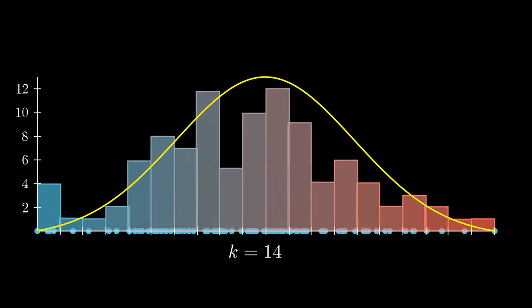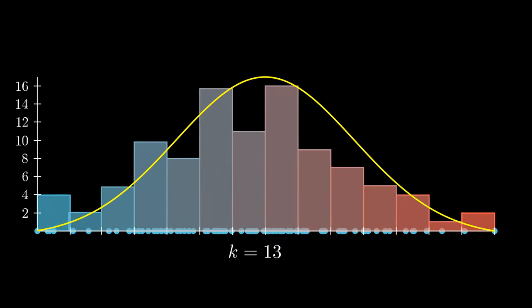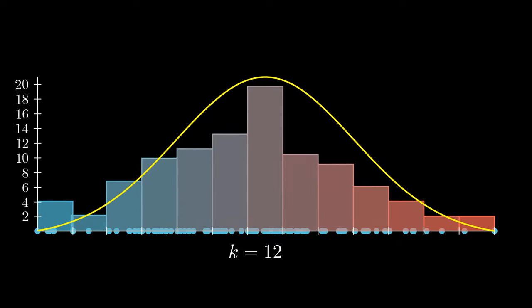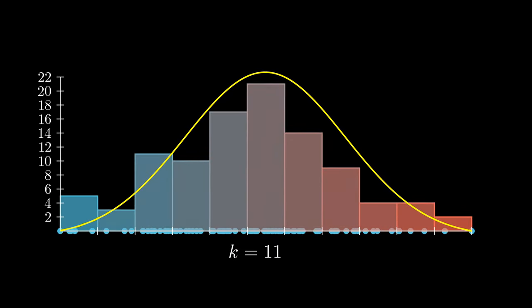However, if we make the bin sizes just right to capture just enough data based on our sample size in each bin, we start to see a meaningful shape. We see this bell-shaped curve that we call the normal distribution.